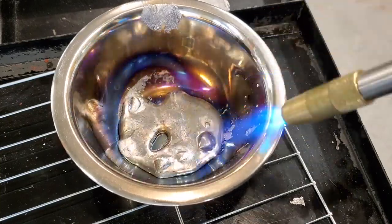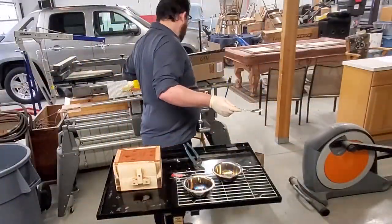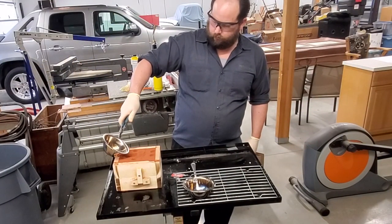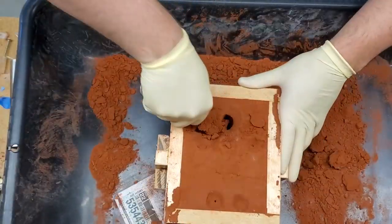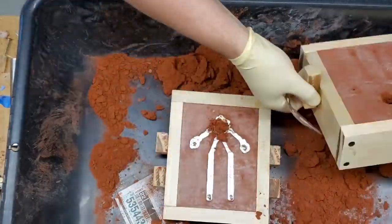The tin ingots are heated using map gas. The dross is scraped from the liquid and the molten tin is poured. After a few minutes, the casting is dug out and removed from the mold.